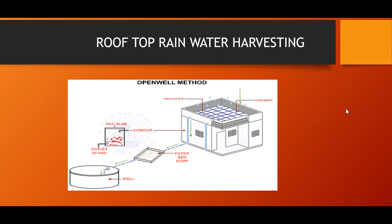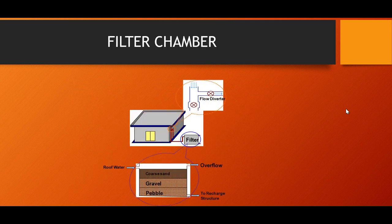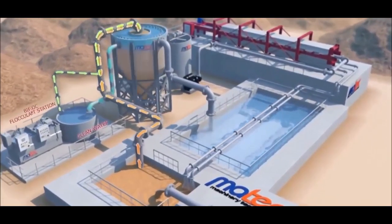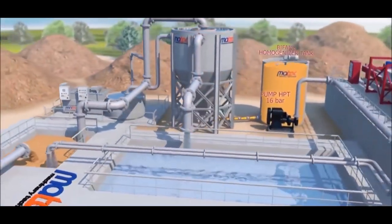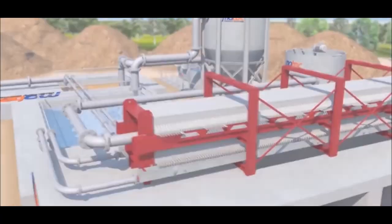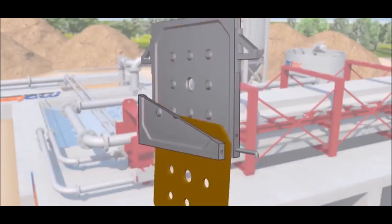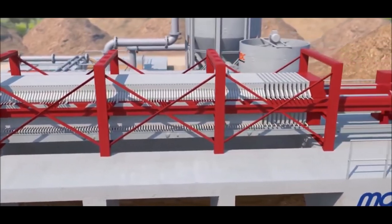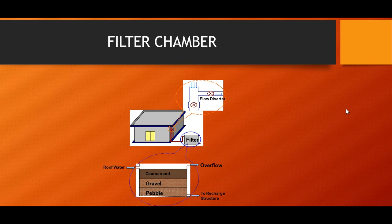The structure of the filter is very clear: the bottom-most bed is pebbles, followed by gravel, followed by coarse sand. As mentioned earlier, the first spell of rainwater is contaminated. On the top right of the diagram there is a flow diverter, whose purpose is to arrest runoff from the first spell and allow it to flow outside through the normal drain. The rest of the rainfall occurring during the monsoon period is diverted through this filter. This emphasizes what the structure of the filter is and how it is designed.